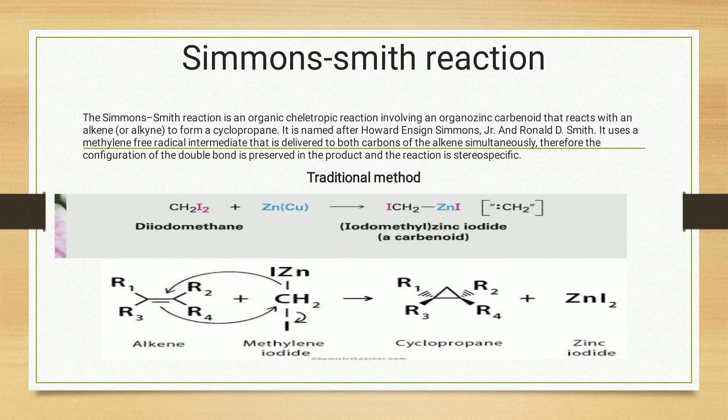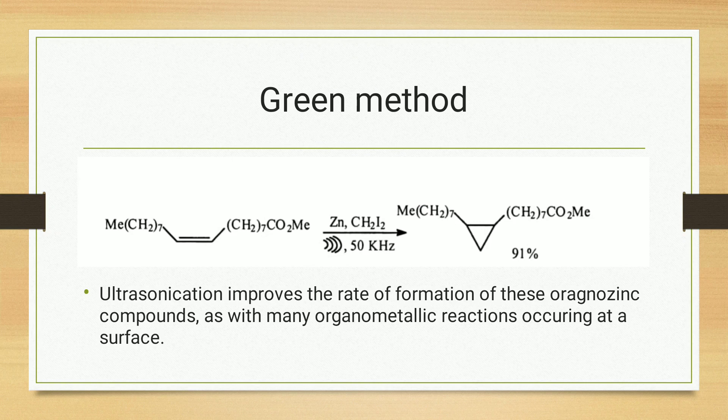The mechanism of the Simmons-Smith reaction is that both the new bonds are formed simultaneously at the carbon-carbon double bond. Iodide leaves the carbon, which then undergoes an electrophilic addition. Electrons from the nucleophilic carbon-zinc bond form the other carbon-carbon bond.